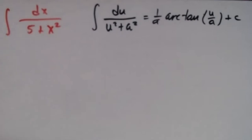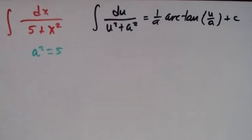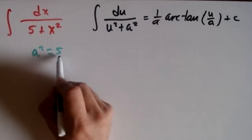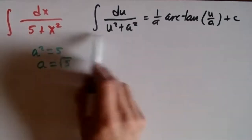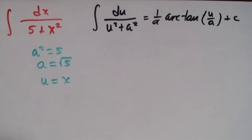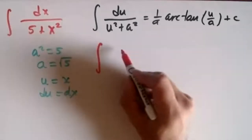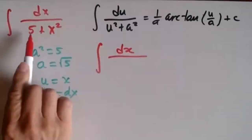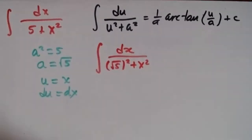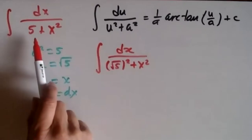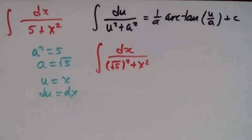Matching the denominators: a squared equals 5, so a equals the square root of 5. Then u equals x, and du equals dx. The trick is: if you don't have a perfect square like this, you take the square root of the number and then square it. So 5 becomes (√5) squared.